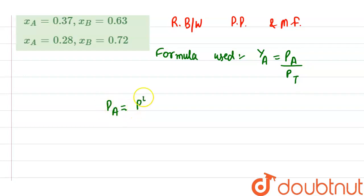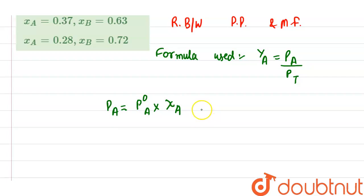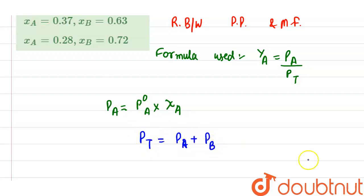P_A equals P°_A times x_A, where P°_A is the pure vapor pressure of liquid A and x_A is the mole fraction of A in the liquid phase. The total pressure P_T equals P_A plus P_B.